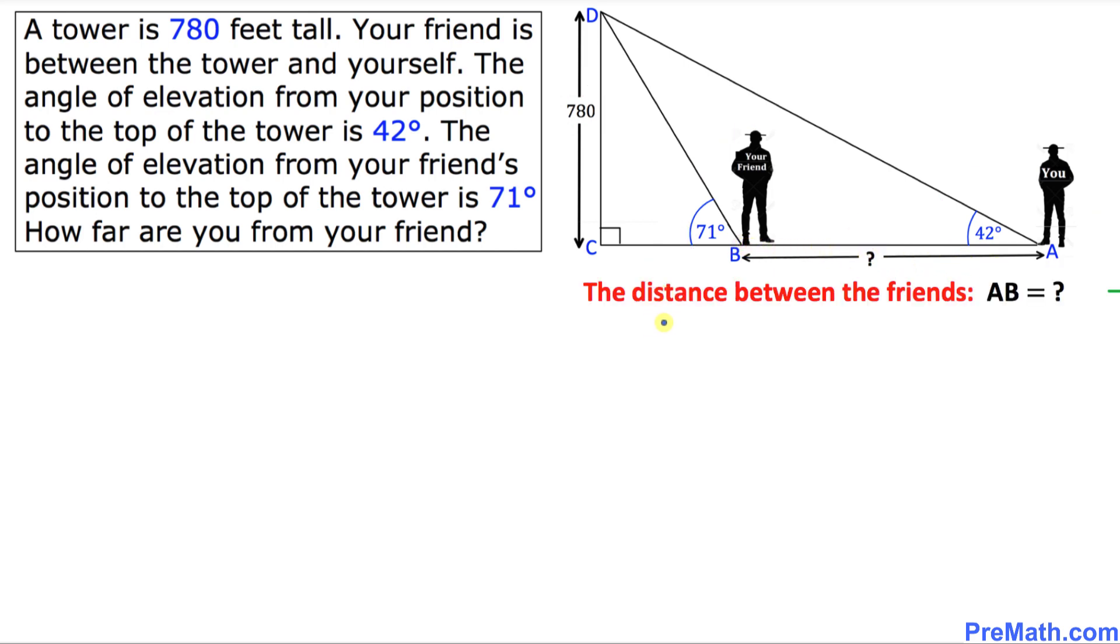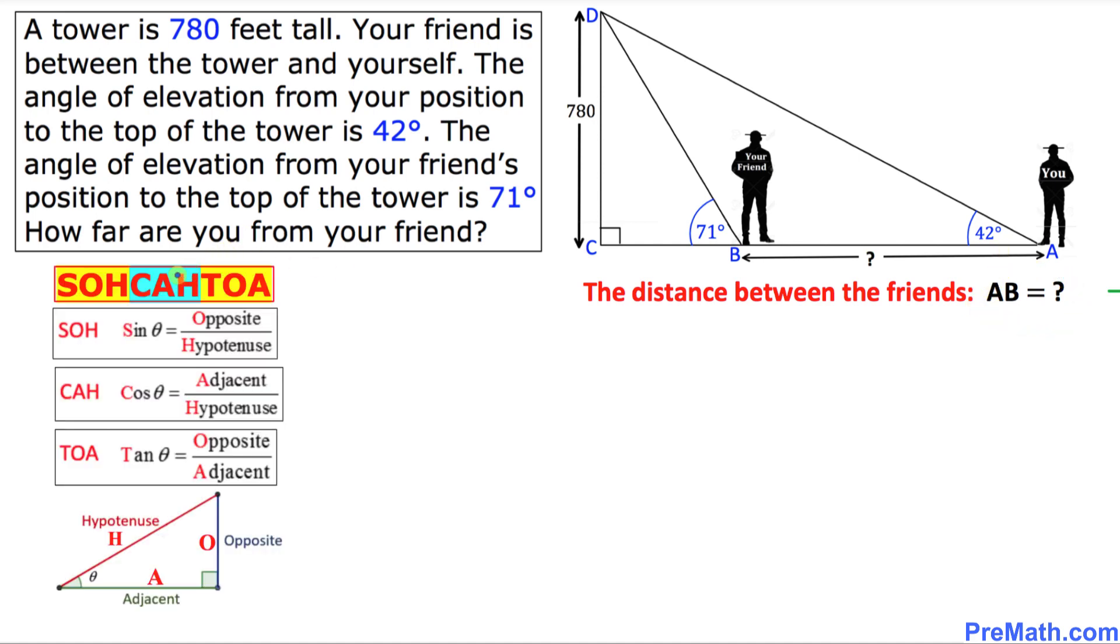So thus our task is to find the distance between these two friends which is AB and we need to find out the value of that one. So before we go any further let's go ahead and look at this SOHCAHTOA chart pretty quick. And here we are interested in this part: TOA. TOA stands for tangent equals opposite over adjacent. So tangent is our trigonometric ratio that we need to take care of for our given problem.